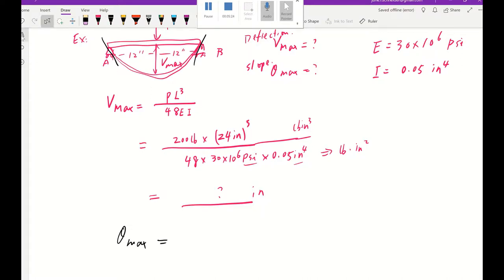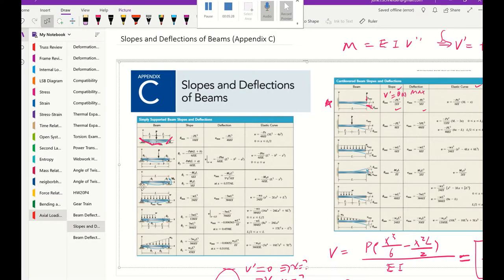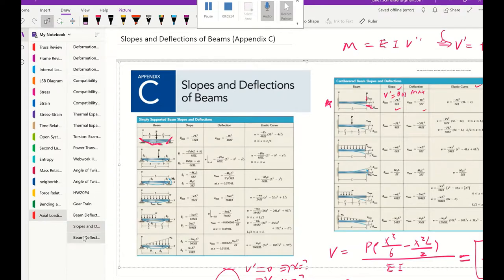I'm going to show you one more time. It's in your book. And it's going to be this value, P L squared over 16 EI.